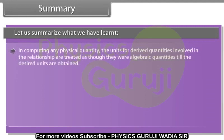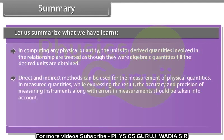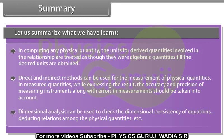In computing any physical quantity, the units for derived quantities involved in the relationship are treated as though they were algebraic quantities till the desired units are obtained. Direct and indirect methods can be used for the measurement of physical quantities. In measured quantities, while expressing the result, the accuracy and precision of measuring instruments along with errors in measurement should be taken into account. Dimensional analysis can be used to check the dimensional consistency of equations, deducing relations among the physical quantities.